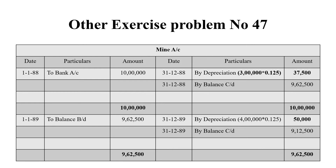On 1-1-1989, balance brought down is 9,62,500. Depreciation for that year: 4 lakh tons × 0.125 = 50,000 rupees. So the balancing figure is 9,12,500. The grand total on both sides is 9,62,500. This balance of 9,12,500 is carried down to the next year.